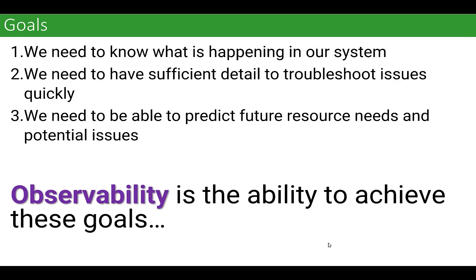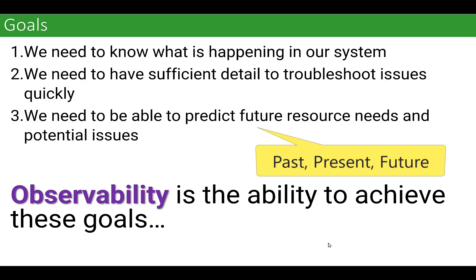The first thing we need when we're going to talk about observability is what are we trying to achieve? What are our goals? First and foremost, our system is now running over there — so what's happening? Secondly, we need to have sufficient detail so when something does happen and it's not a good thing, that we have a way of troubleshooting. And lastly, we need the ability to predict the future. So observability is the ability to achieve these goals.